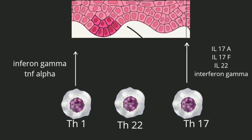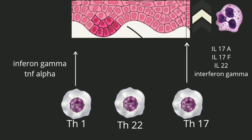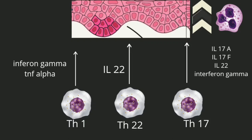Th17 cells are also very important. They produce interleukin-17A, interleukin-17F, interleukin-22, and interferon-gamma. An easy way to remember: they take one interleukin from each neighboring cell — interleukin-22 from the Th22 cell and interferon-gamma from the Th1 cell. These interleukins act on keratinocytes and increase keratinocyte proliferation. They also recruit neutrophils to the epidermis. Neutrophils are important in the histopathology of psoriasis but are only contributory in the pathogenesis, not the main cells like the T cells.